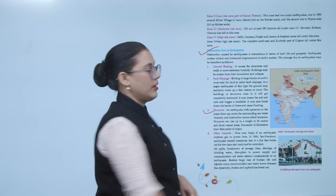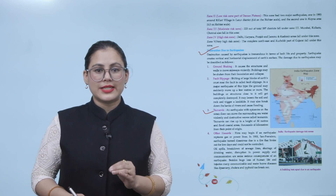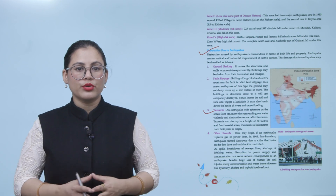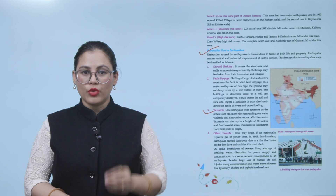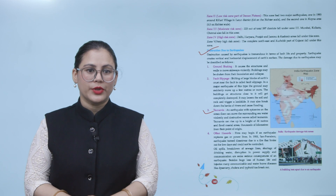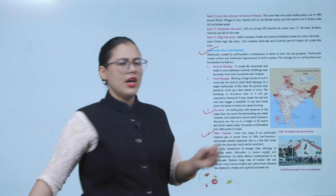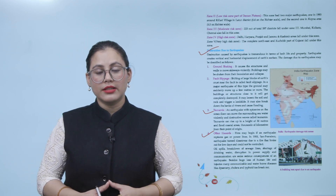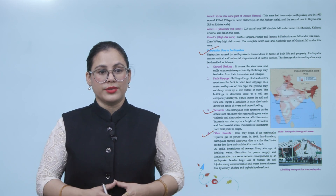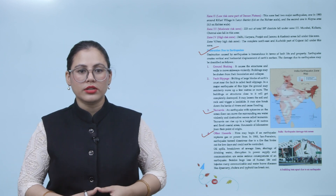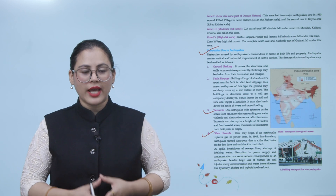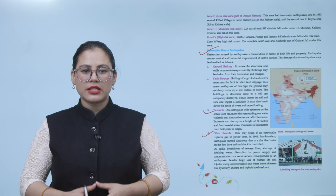Number three, tsunamis: an earthquake with its epicenter on the ocean floor can move the surrounding sea water violently, creating destructive waves called tsunamis. Tsunamis can rise up to 30 meters and flood coastal areas thousands of kilometers from the point of origin. Number four, other hazards: fires may begin if an earthquake ruptures gas or power lines. In 1906, the San Francisco earthquake turned disastrous due to a fire that broke out for a few days and could not be controlled. Oil spills, breakdown of sewage lines, shortage of drinking water, disruption in power supply and communication are serious consequences. Besides huge loss of human life and injuries, many communicable and waterborne diseases like dysentery, cholera, and typhoid break out.